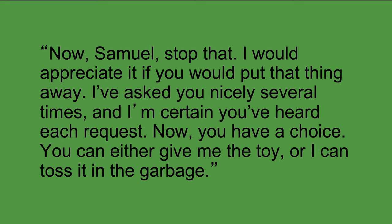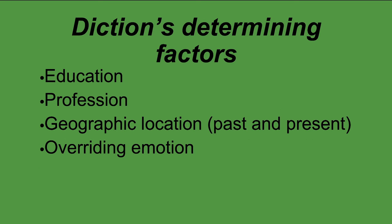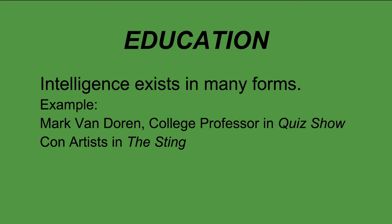One might sound more educated than the other. Keep in mind there's an important distinction between intelligence and education. The way people speak based on whether or not they're educated will determine how people speak. These are called diction's determining factors: education, profession, geographic location, and overriding emotion. Education exists in many forms — just because you're educated doesn't mean you're necessarily intelligent, or vice versa.